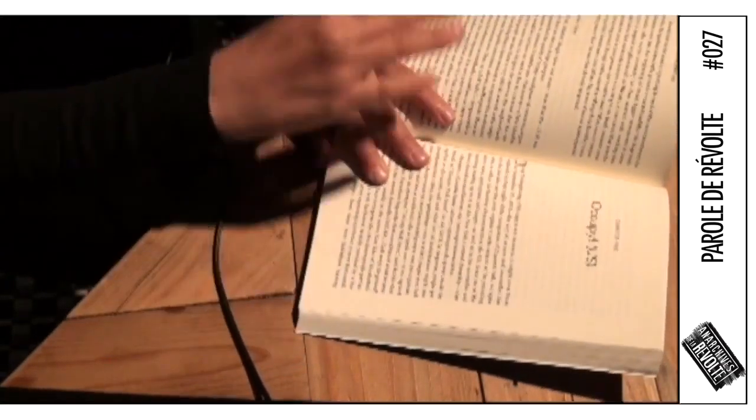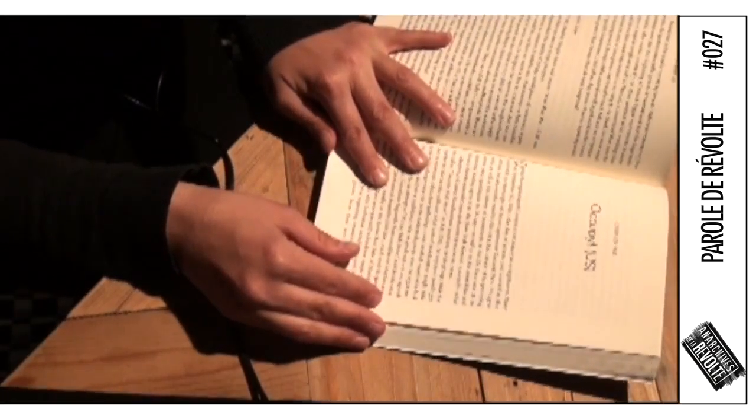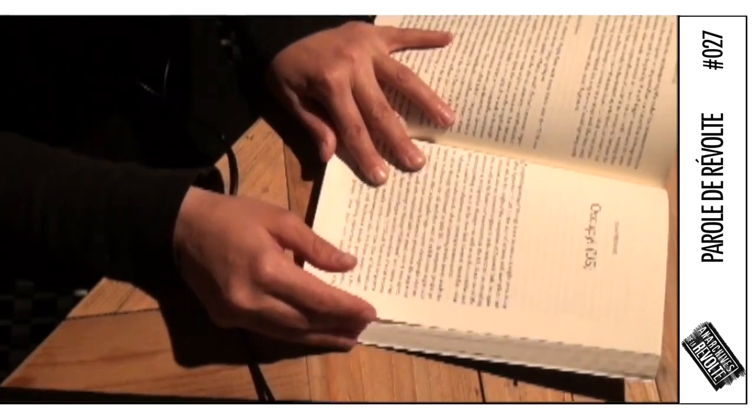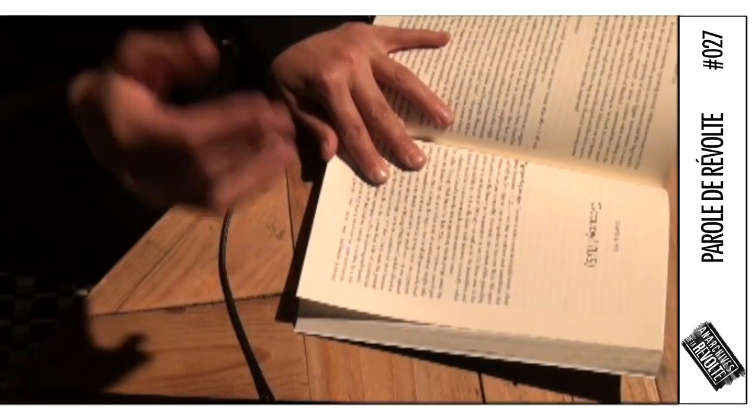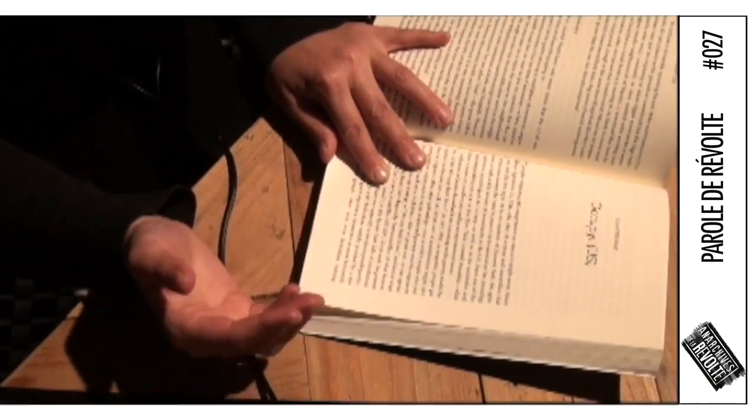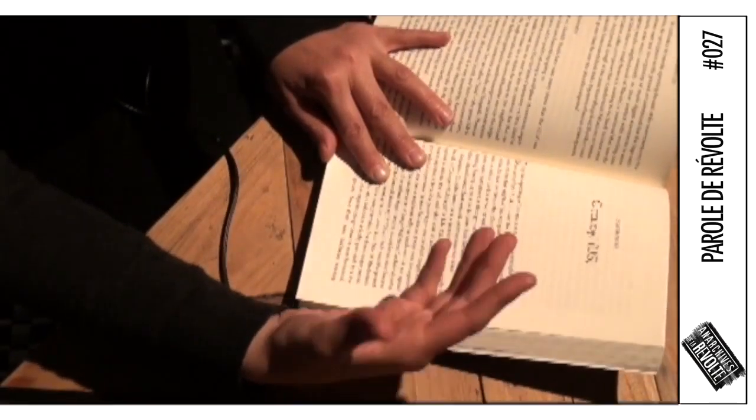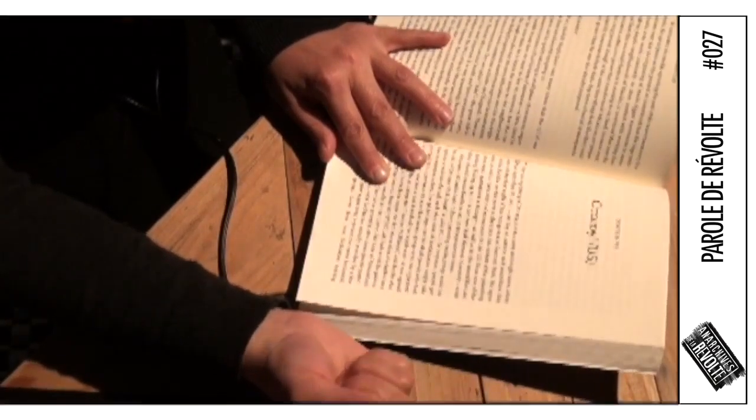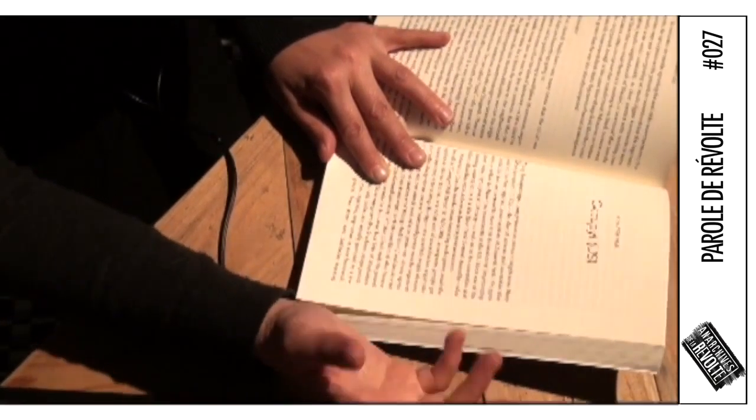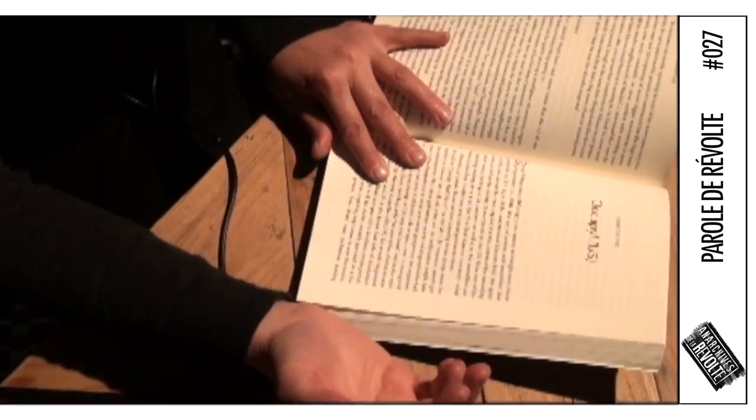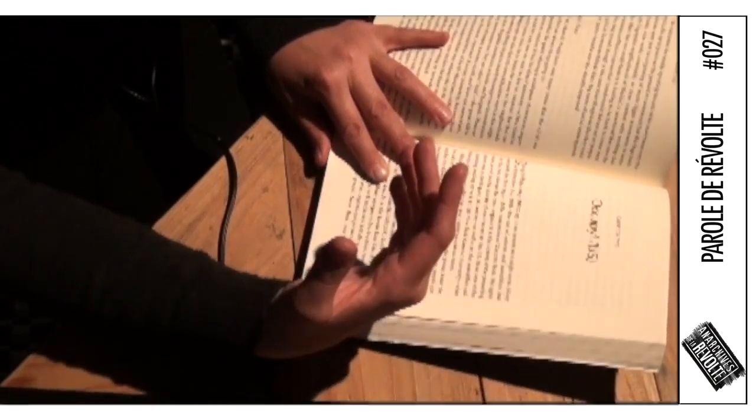Dating the beginning of Occupy is not as easy as it may seem. Many use September 17, 2011, the day of actions and assemblies that ended with the first night of the occupation of Zuccotti Park. We agree with this but also see the need to place it in the context of the preceding weeks as well as the history of movements in the US.